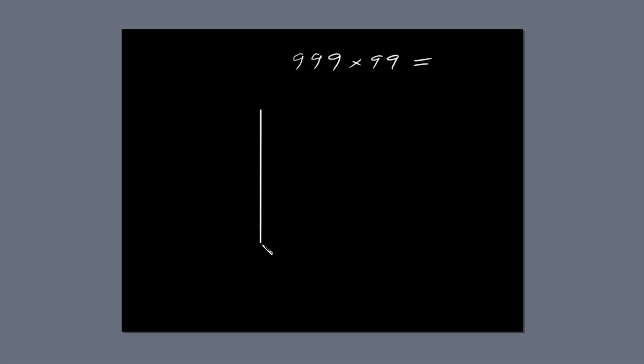The first thing you need to do is draw a box. Subdivide the box into three columns because the first number, 999, has three digits. You also have to subdivide the box into two rows because 99 has two digits. You end up with a box subdivided into six smaller boxes.